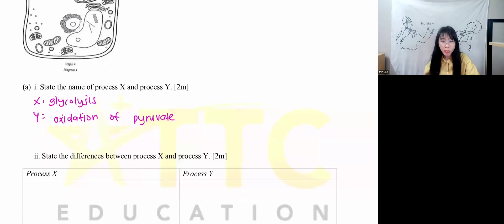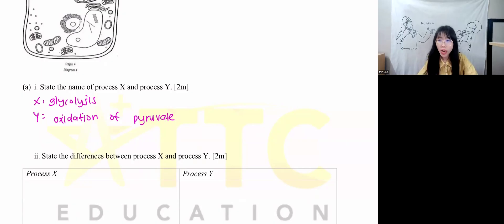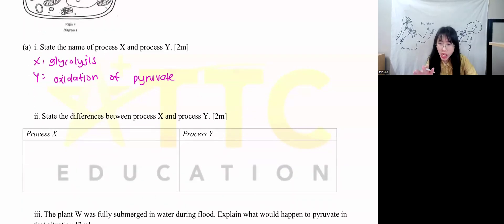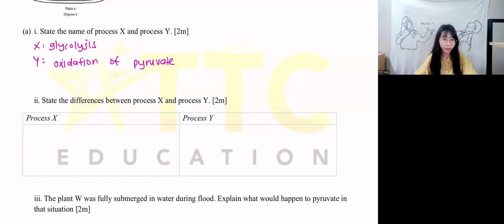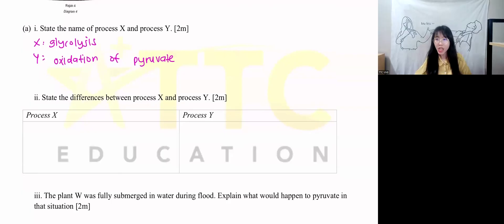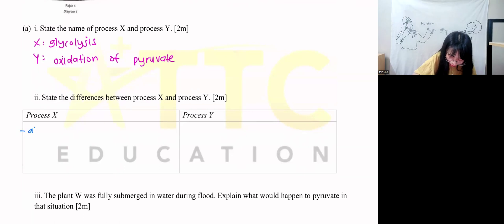State the differences between process X and Y. We can talk about energy production and also the need for oxygen. For glycolysis, do you need oxygen? No. Glycolysis doesn't need oxygen — it's without oxygen. It's the partial breaking down of glucose, and it's called glycolysis. Absence of oxygen.